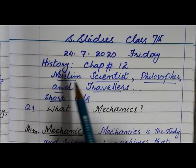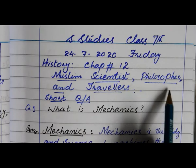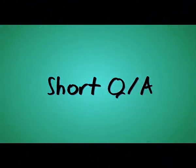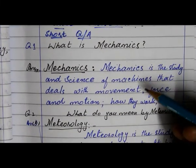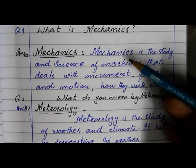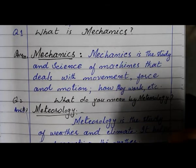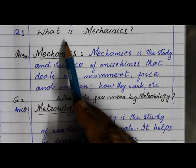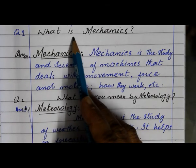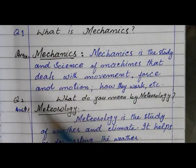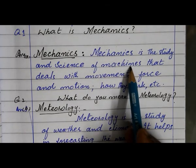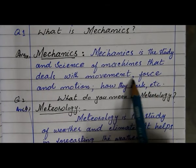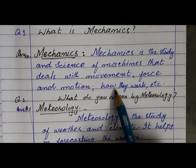There are four questions and answers for history chapter number 12, Muslim Scientists, Philosophers and Travelers. Question number one has three parts. The first question is: What is mechanics? Mechanics is the study and science of machines that deals with movement, force and motion, and how they work.